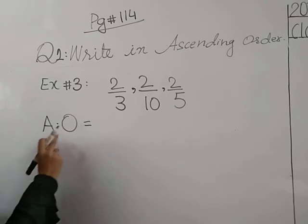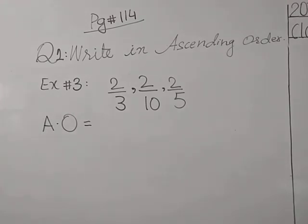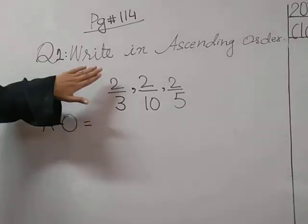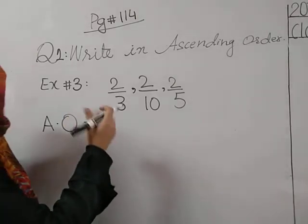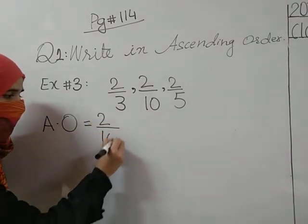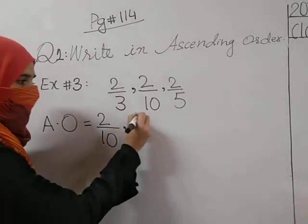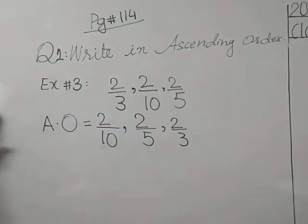Because these are unlike fractions — when our numerator is the same and the denominator is greater, that fraction is actually smaller. So when denominators are different and numerators are the same, the fraction with the greater denominator comes first in ascending order.